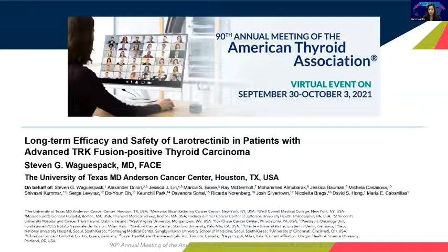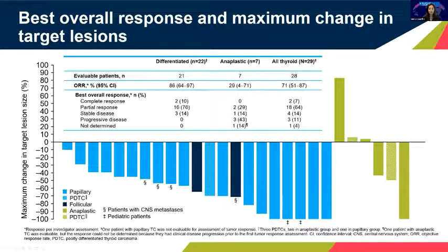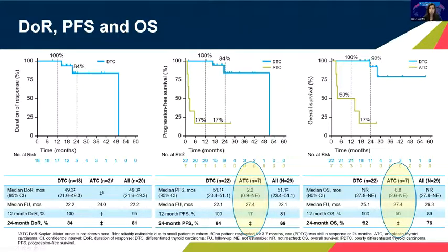This paper — just accepted for publication or close — is from the last ATA meeting, looking at larotrectinib in thyroid cancer patients. In the papillary thyroid cancer patients, phenomenal responses in NTRK fusion papillary: response rate of 86%. But it gets murkier with anaplastic and poorly differentiated — these were not reviewed centrally. In anaplastic thyroid cancer patients, the response rate drops down to 29%, and progression-free survival is also vastly different compared to differentiated thyroid cancers versus ATC.